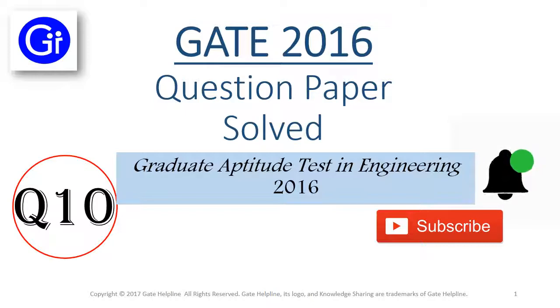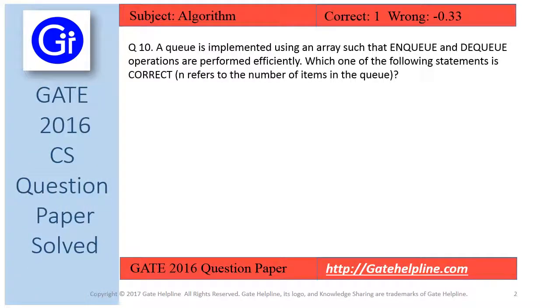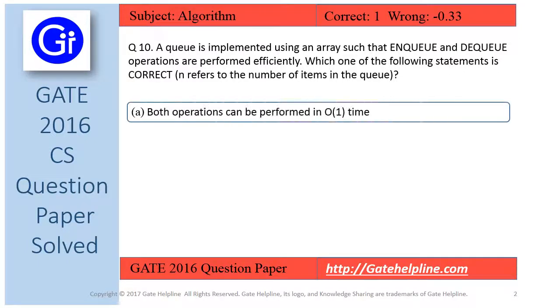So let's start question number 10. Question number 10 is: a queue is implemented using an array such that enqueue and dequeue operations are performed efficiently. Which one of the following statements is correct? n refers to the number of items in the queue.